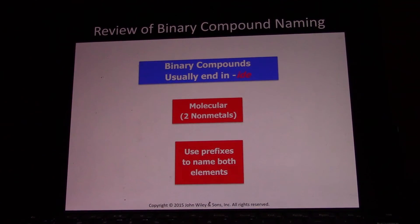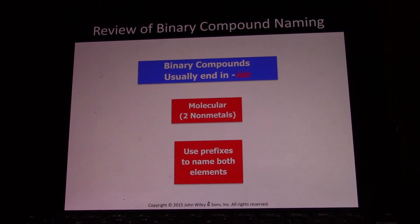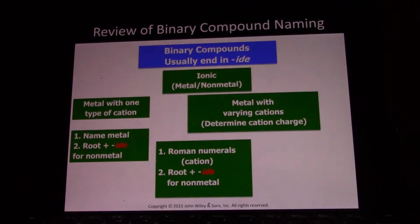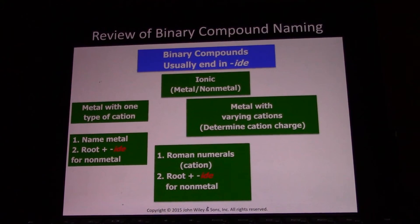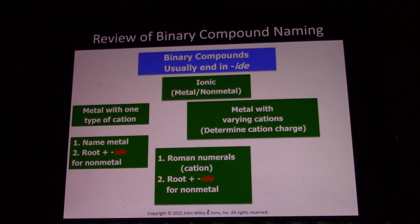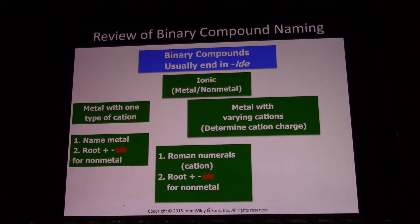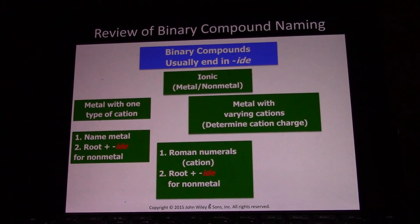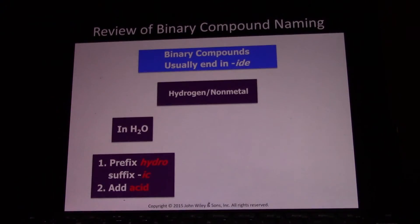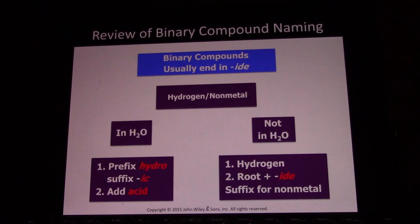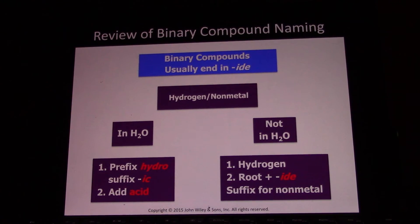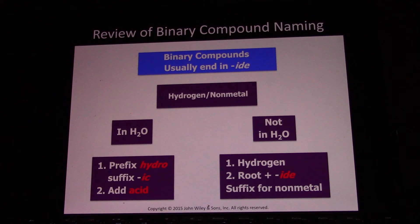Here's a quick review of binary compounds. Molecular compounds are two nonmetals or a metalloid and a nonmetal — use Greek prefixes. For ionic compounds, it's a metal and a nonmetal; if the metal can have varying charges, use a Roman numeral or the classical system to specify the charge, then the root of the nonmetal plus IDE — like iron chloride. If the compound is dissolved in water it becomes an acid: hydrochloric acid, hydrofluoric acid, hydrobromic acid, hydroiodic acid. If not in water, it keeps its molecular name: hydrogen chloride, hydrogen bromide, hydrogen fluoride, hydrogen iodide.